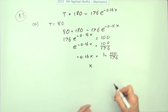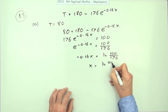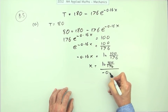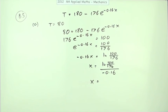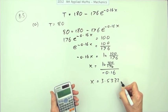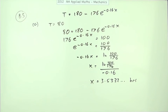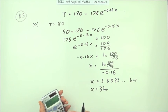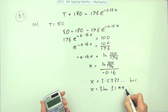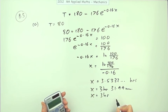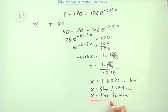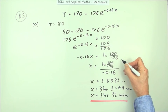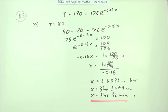Dividing by negative 0.16: x equals ln(100/176) divided by negative 0.16. Putting it into the calculator gives 3.5332 hours. Since the answer is needed to the nearest minute, that's 3 hours and then 0.5332 multiplied by 60, which gives 31.99 minutes — so 3 hours and 32 minutes.